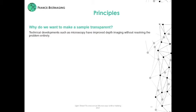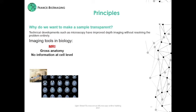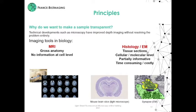What are the imaging tools today in biology? We can use MRI to observe gross anatomy, but it doesn't give us any information at the cell level. We also use classical histology with electron or confocal microscopy. These techniques use tissue sections and are more resolutive, achieving information at cellular and molecular levels.